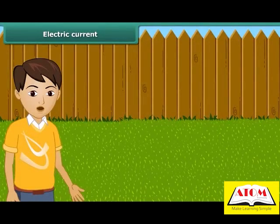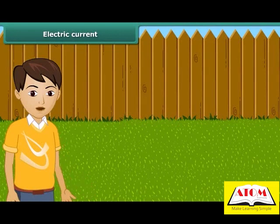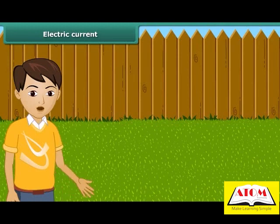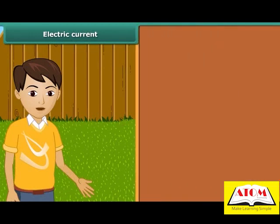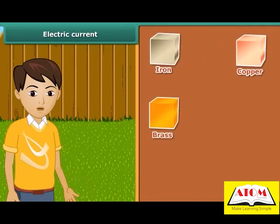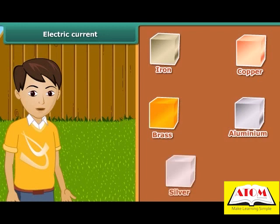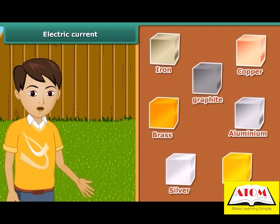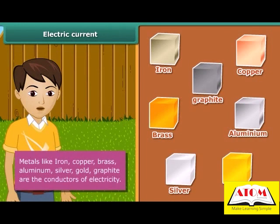Some materials allow electric current to pass through them. Others do not. The materials that allow electric current to pass through them are called conductors. Iron, copper, brass, aluminium, silver, gold, graphite, etc. are the conductors of electricity.